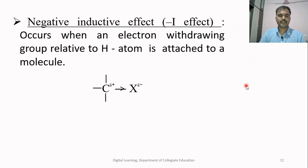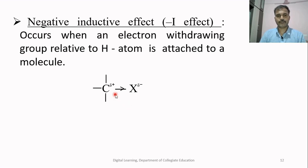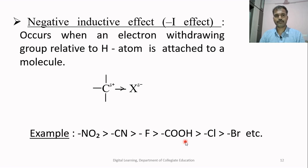The negative inductive effect (-I effect) occurs when an electron-withdrawing group relative to hydrogen is attached to a molecule. The group X pulls the shared pair of electrons towards itself, resulting in partial negative charge on X and partial positive charge on carbon. The inductive effect involving partial displacement of the electron pair towards the substituent is called negative inductive effect. Groups showing -I effect in decreasing order: NO2 > CN > F > COOH.